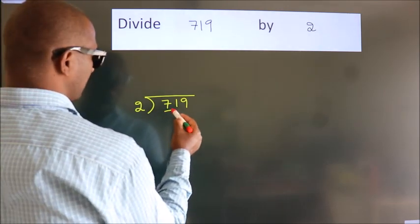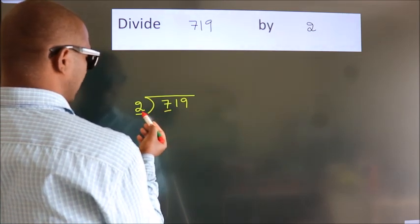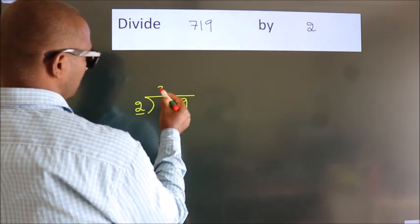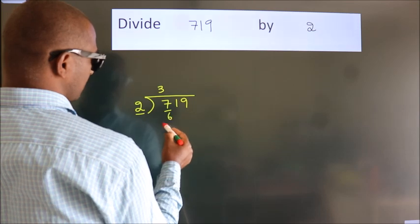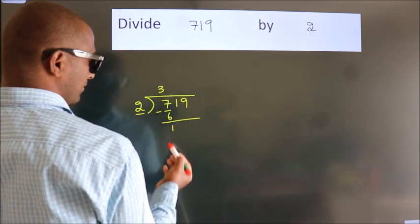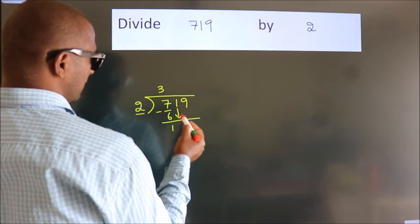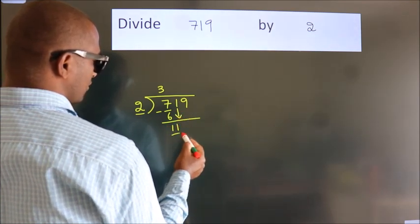Next, here we have 7, here 2. A number close to 7 in the 2 table is 2 times 3 is 6. Now we subtract and get 1. After this, bring down the beside number. 1 down, so 11.